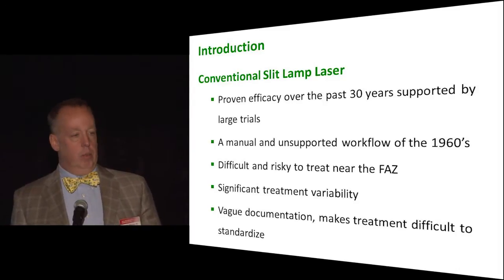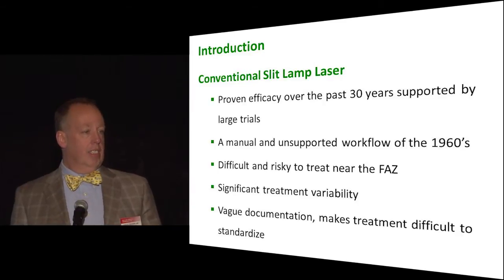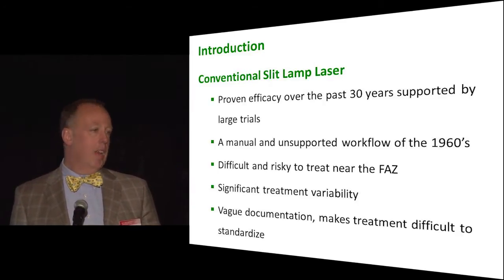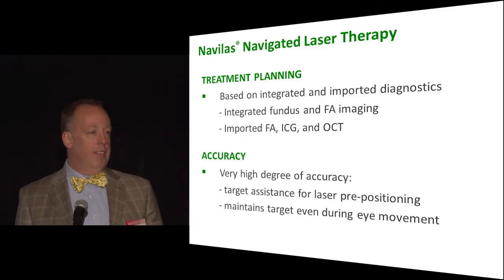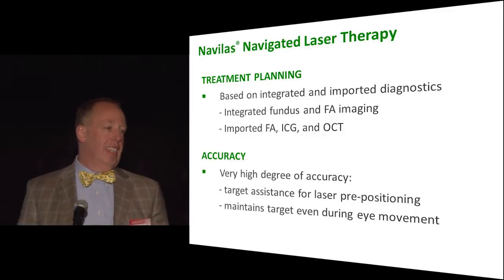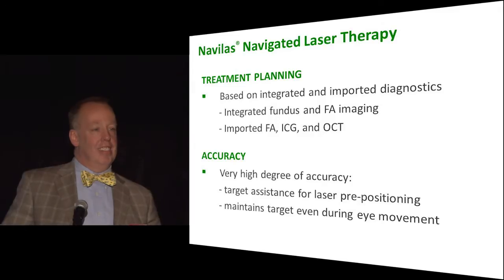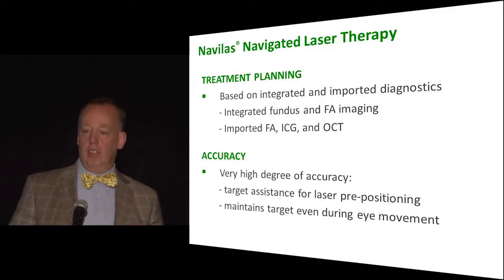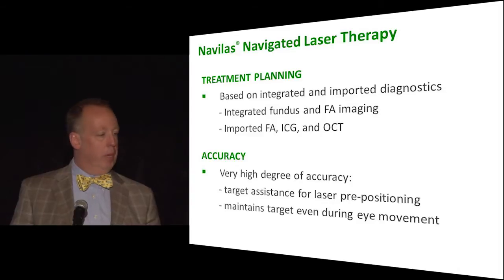Traditionally we would hold off on micro aneurysms near the FAZ until quite late in the patient's course. With this system, you're a lot more confident that you can actually hit exactly where you want to. You also have no documentation unless your burns are so hot you can see them. This allows you to know exactly where you laser, and with a sub-threshold or right-at-threshold laser burn, you can know exactly where you are so you don't hit that same spot again.